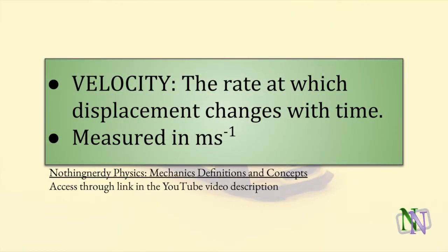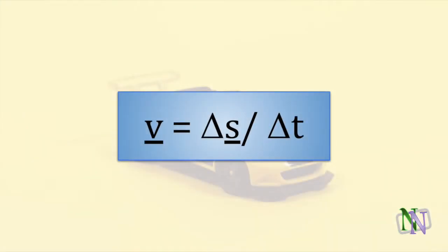Here is the definition of velocity: the rate at which displacement changes with time. Since it is calculated using displacement, velocity is also a vector and has a direction. Its units are derived from its formula. Displacement in meters divided by time in seconds gives us meters per second. Here is the formula which defines velocity. You can see in the formula that velocity V and displacement S are underlined, which shows that they are vectors. Time is not underlined because it is scalar.